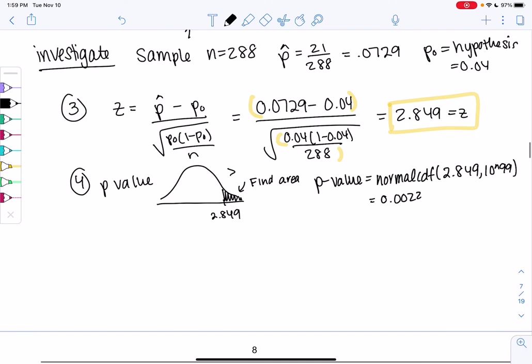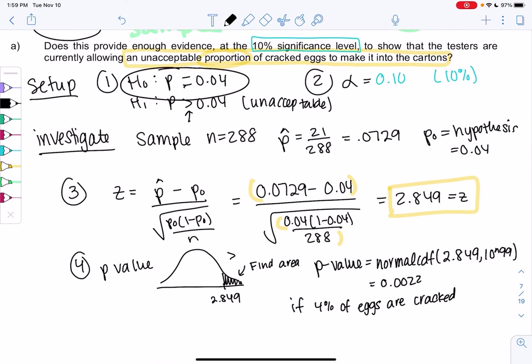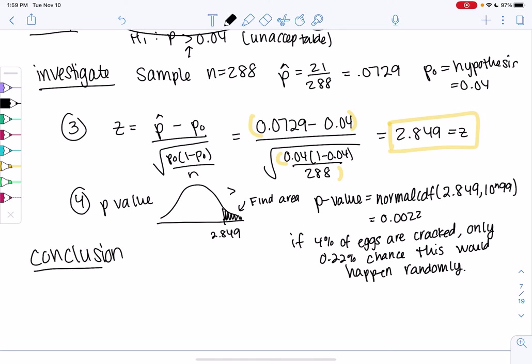The idea here is saying that if 4% of eggs are cracked, and that's coming from the H0, if H0 is true, there's really only a 0.22% chance this would happen randomly. Which means it's probably not random. And it means it probably isn't equal to 0.04. So our conclusion is we're going to reject, because it's very unlikely that it's random, which means it's very unlikely that it's actually 4%.